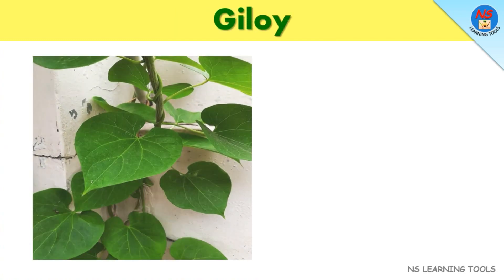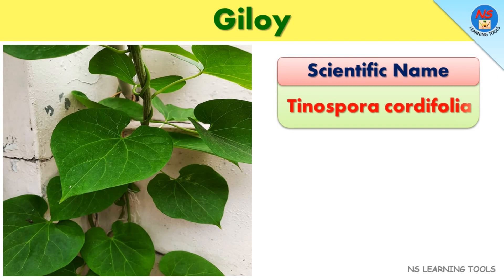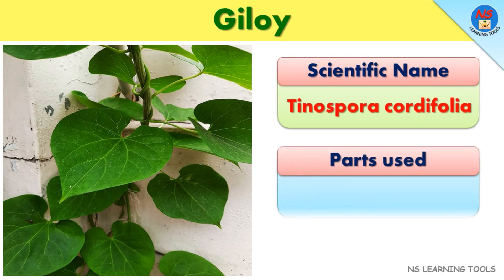Geloi. Scientific name: Tenospora cordifolia. Parts used: Stem, root.